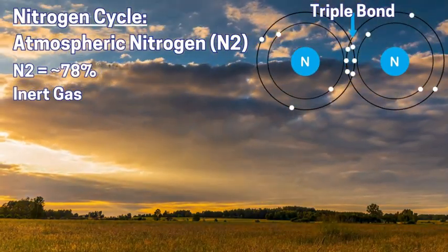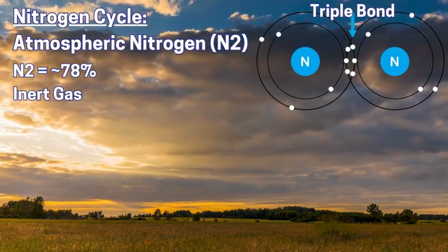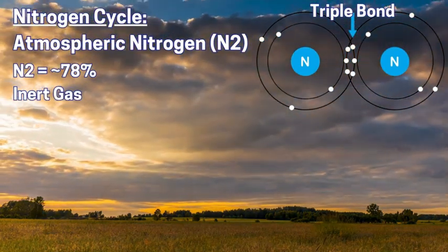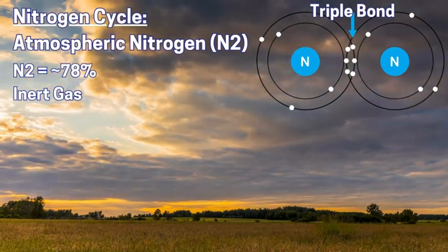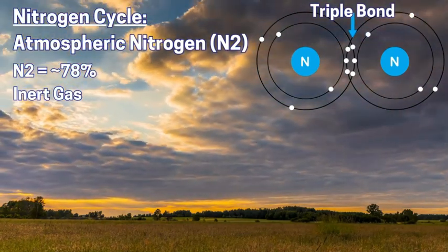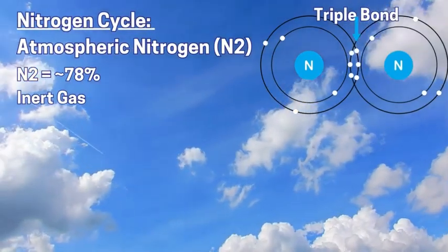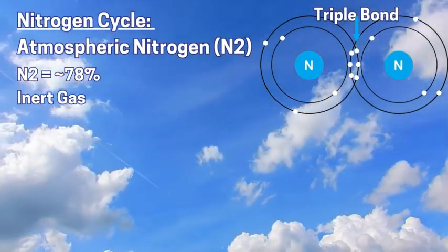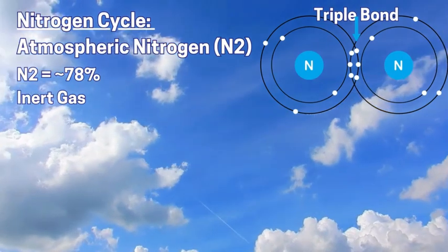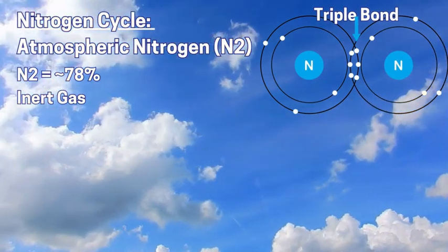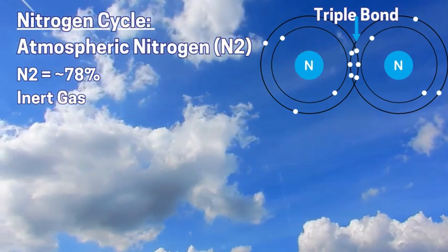The atmosphere contains three main gases: argon at about 0.9%, oxygen at about 20.8%, and nitrogen at about 78%. Nitrogen occurs as N2 in the atmosphere, meaning two atoms are bonded together through electrons. This is a very strong bond called a triple bond, making it an inert gas that doesn't readily react with other elements or gases.